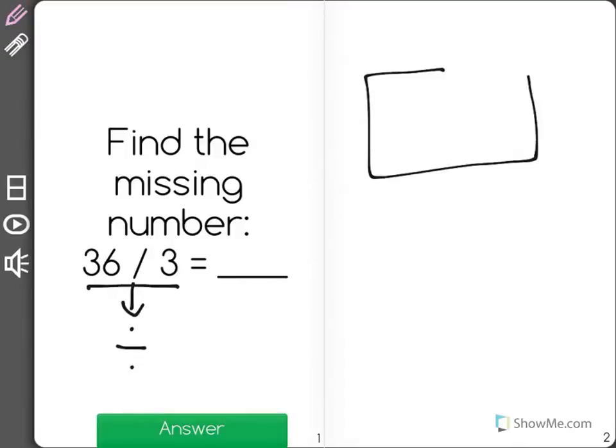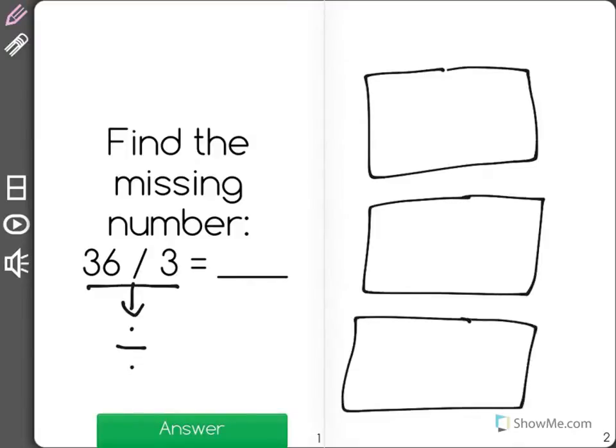That means 36 split evenly into 3 groups. So I'm going to draw this problem out. Now if I have 3 groups and a total of 36, I want to find out how many will end up in each group.